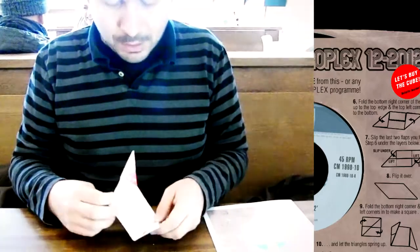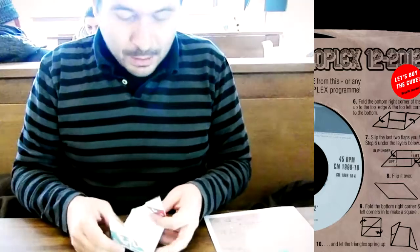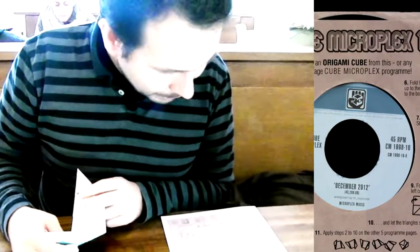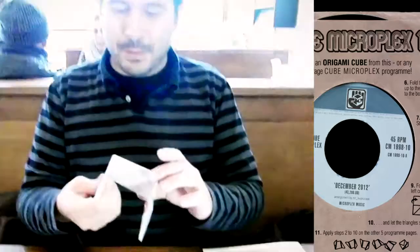So just let go and then they'll spring away. Just like this. Okay, cool. So then you have, I think, a bit of science. And then apply steps two to ten on the other five program pages. So we'll carry on doing it and I think we'll do a fast forward or edit this? Yeah. Something like that. Maybe fast forward. Okay.